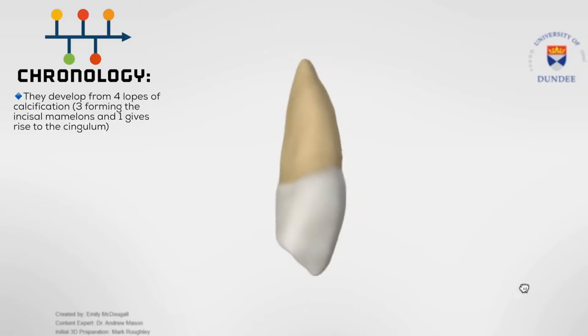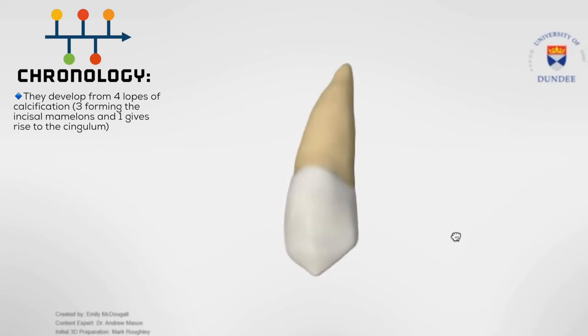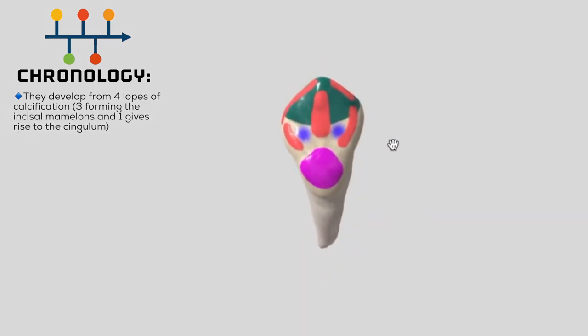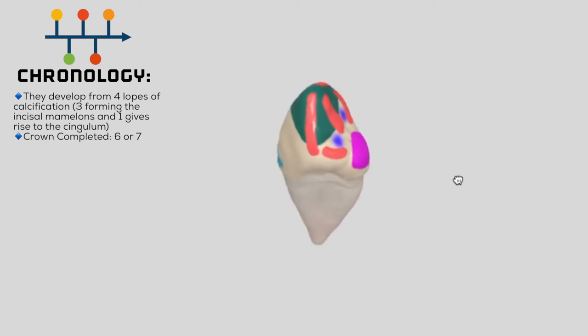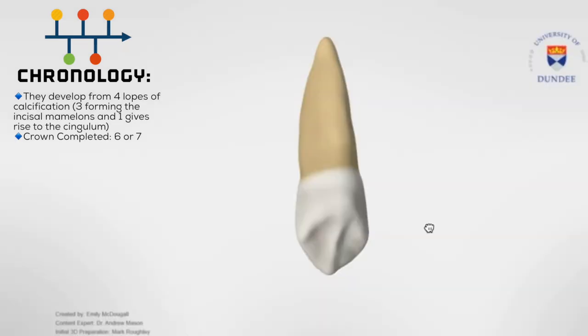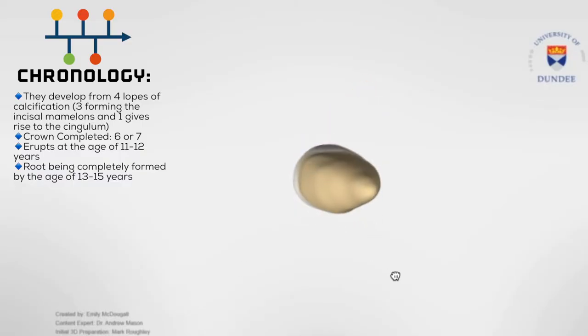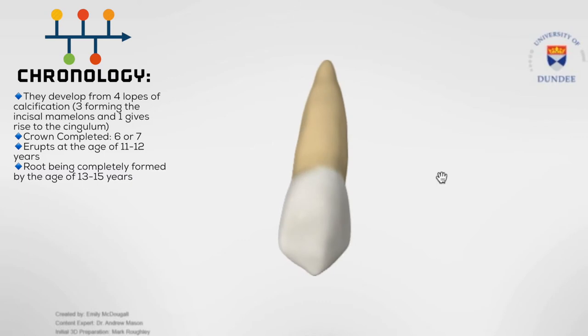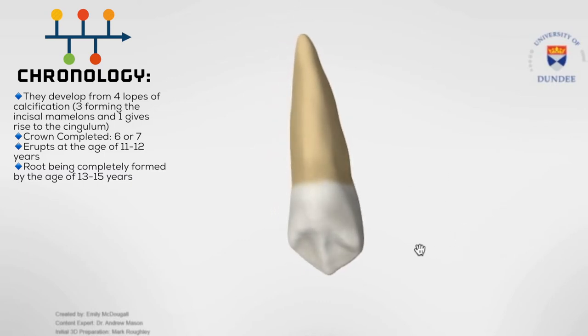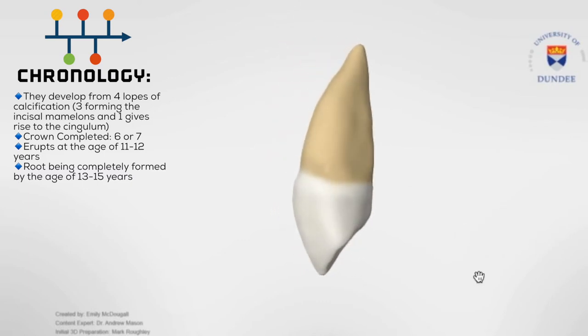They develop from four lobes of calcification, three forming the incisal mamelons and one giving rise to the palatal surface. The crown will conclude its development around the age of six to seven, allowing the tooth to erupt around the age of 11 to 12, with its root being completely formed by the age of 13 to 15. It usually takes about two to three years once the tooth has erupted into the oral cavity for its root to be completely formed.